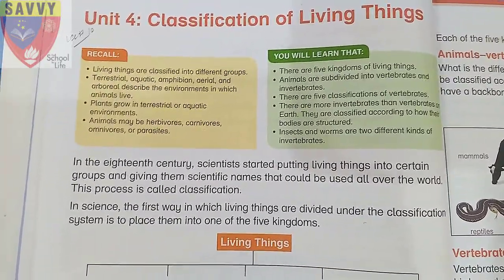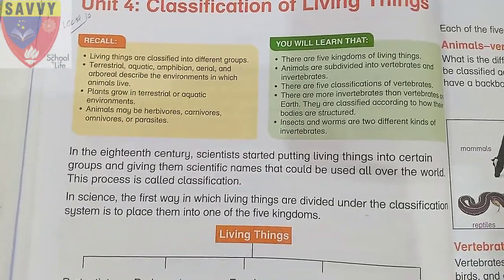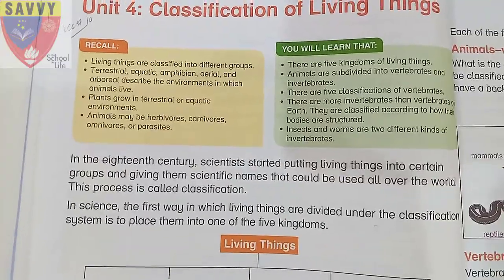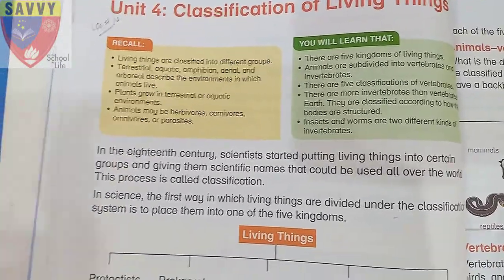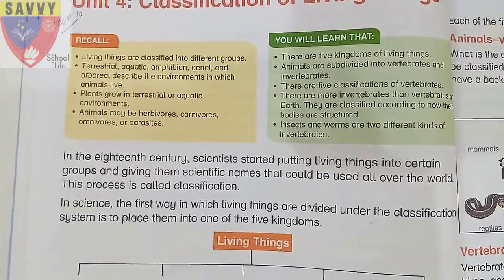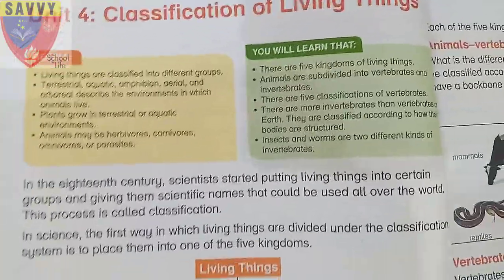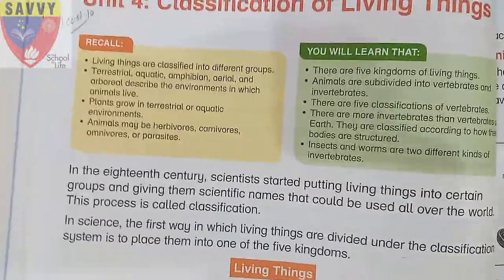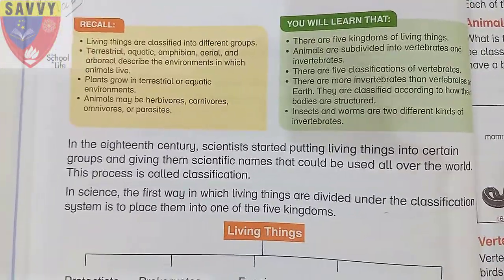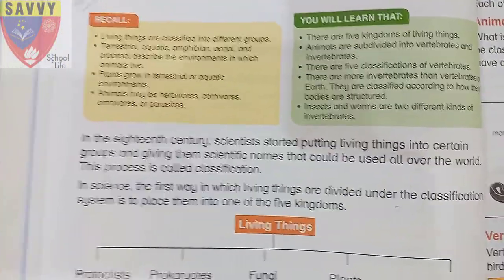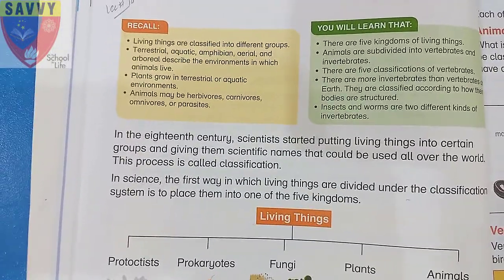Scientists started putting all knowledge into groups, grouping living things and giving them scientific names. When living things are given a name for their species, this process is called classification — simply grouping living things and giving them a name. In science, the first way living things are divided under the classification system is to place them into one of the five kingdoms.